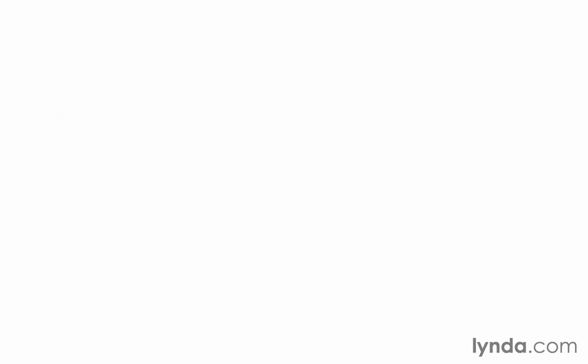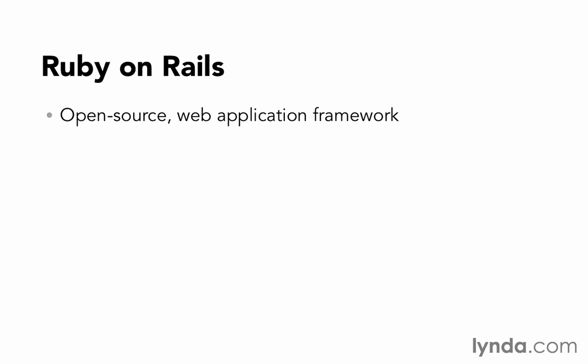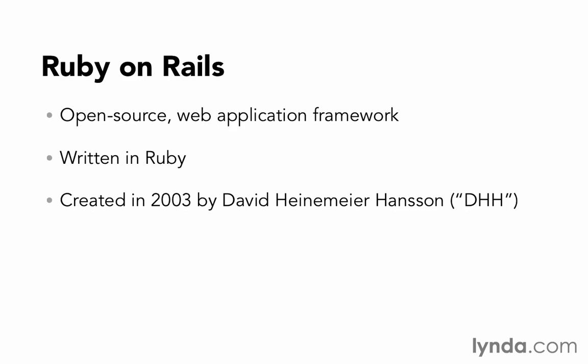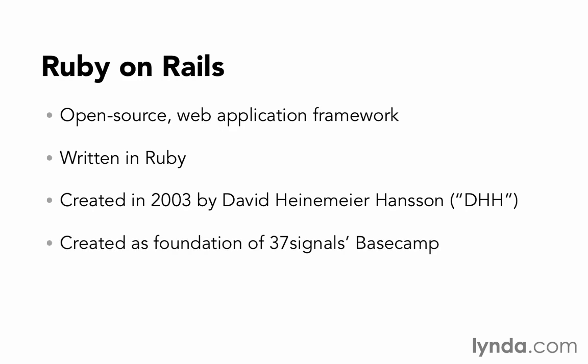Now if Ruby is the first half, then Rails, or Ruby on Rails, is the second half. So what is Rails? It's an open-source web application framework that's written in the Ruby language. It was created in 2003 by David Heinemeier Hansson, who the community often refers to as simply DHH for short. Rails was created as the foundation of 37signals' Basecamp application, then released as open-source software for anyone to use in 2004. Ruby had been in existence for 10 years before DHH decided that Ruby would be a great programming language for writing a web application framework.